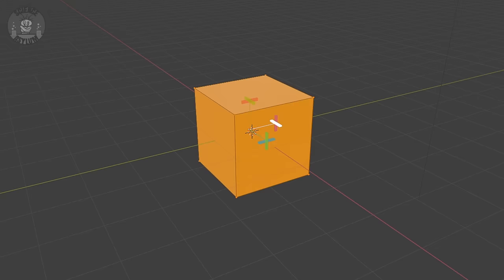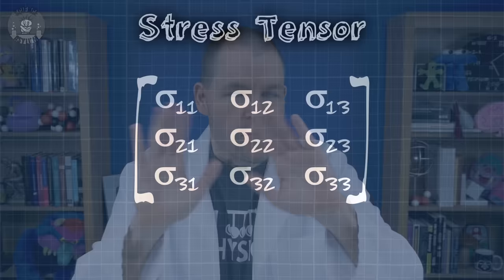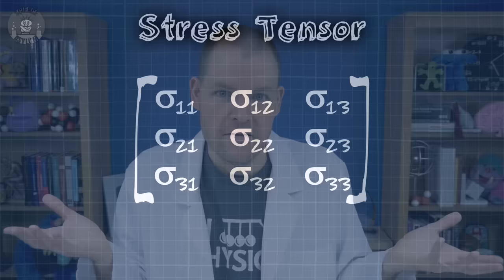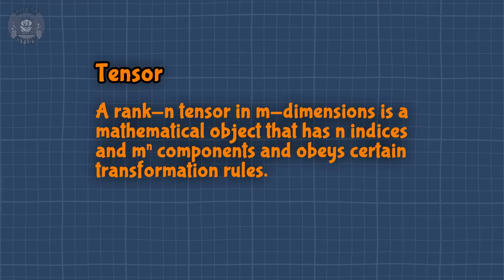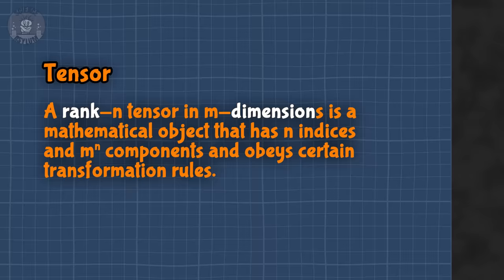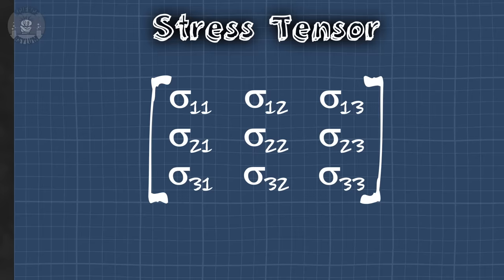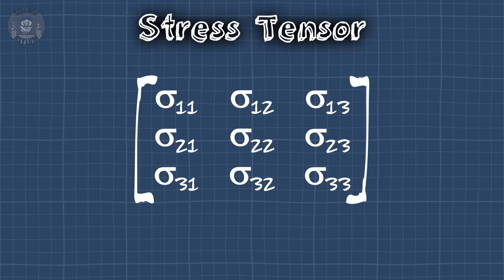These nine different stresses are usually organized into a 3x3 matrix called the stress tensor. Quick disclaimer: it's not a tensor because I can write it as a matrix — matrices and tensors are not the same thing. A matrix is just a convenient way to organize numbers. Writing the stress tensor like this, we can see it clearly has nine components. Our definition mentioned two specific properties: rank and dimension. This cube is three-dimensional, so any tensor describing its behavior will also be three-dimensional, which is why our stress tensor is organized into three rows and three columns, each corresponding to a specific direction in three-dimensional space.